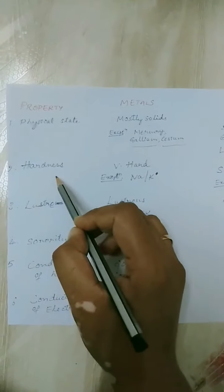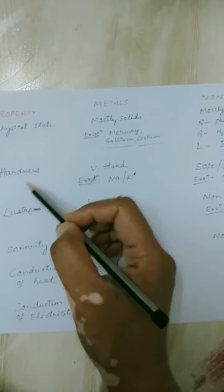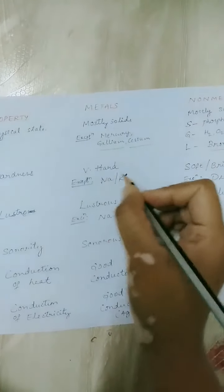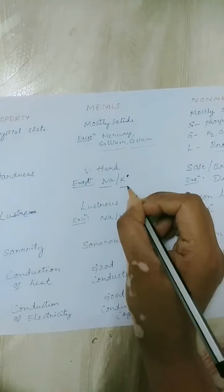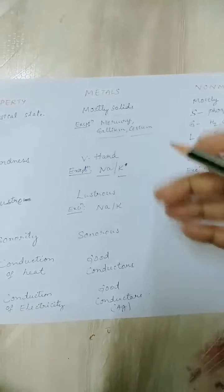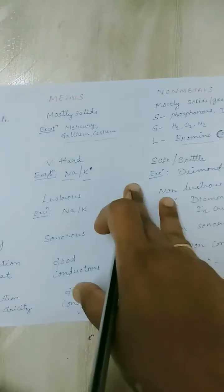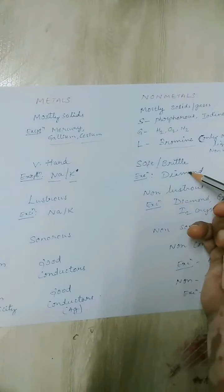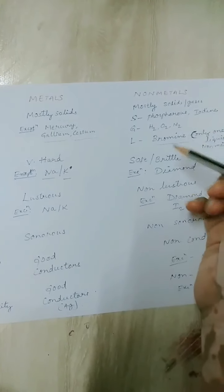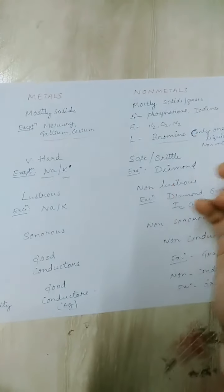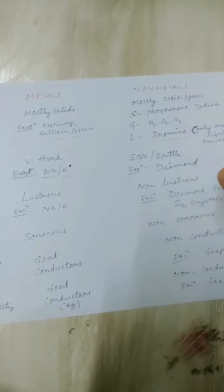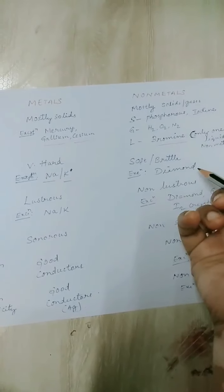The next property is hardness. Metals are very hard, but there is one exception — sodium and potassium are so soft that they can be cut with the help of a knife. Coming to non-metals, they are very soft or brittle — phosphorus and iodine are also brittle. But there is an exception again: diamond, which is the hardest substance on earth.